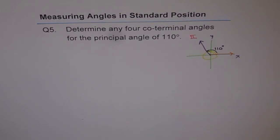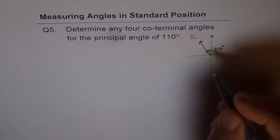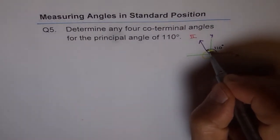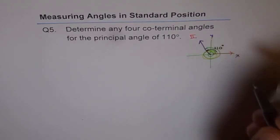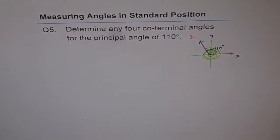Another co-terminal angle for the same angle could be, you can go like this, one round, two rounds, and then come back to this position. That is how you can find two co-terminal angles going anticlockwise.